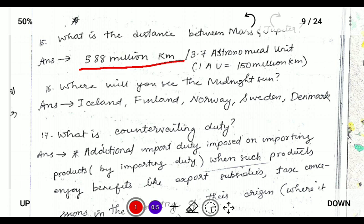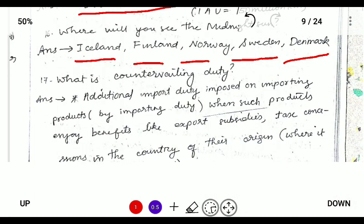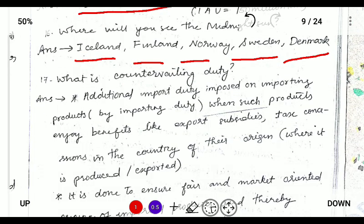Next: where can you see the midnight sun? The midnight sun can be seen in countries like Iceland, Finland, Norway, Sweden, and Denmark, near the Arctic Circle.